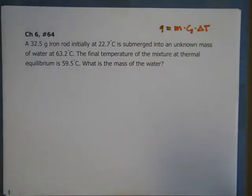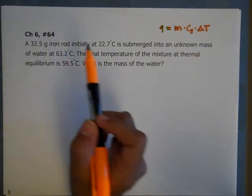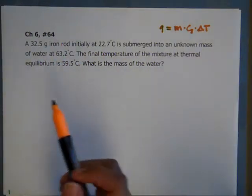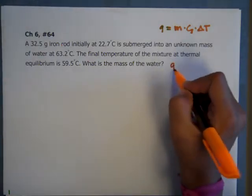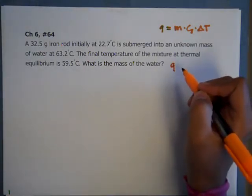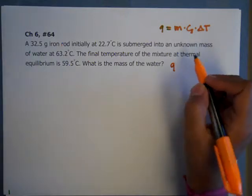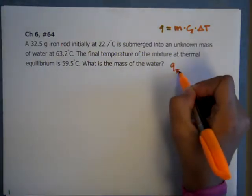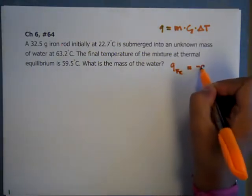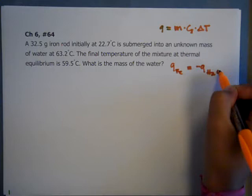So this important concept that is governing this problem is energy transfer and thermal transfer. So there's an iron rod and there's water. The heat transferred from the rod is going into the water. So we have to make the comparison that Q of the rod, I'm just going to abbreviate it as iron, Q of iron equals the negative Q of water.